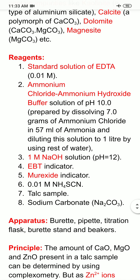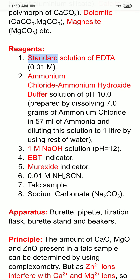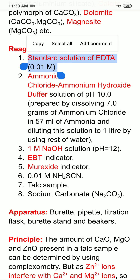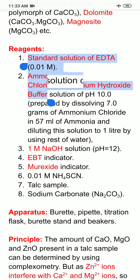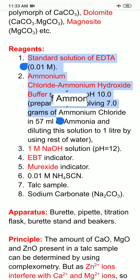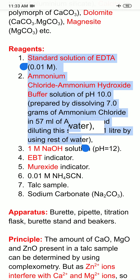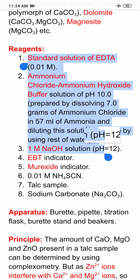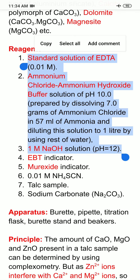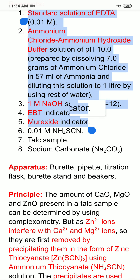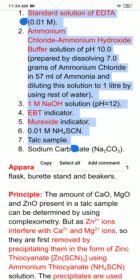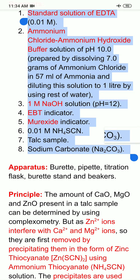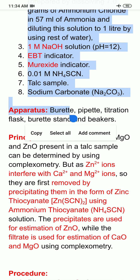For the determination of calcium oxide, magnesium oxide, and zinc oxide in talc, we need certain reagents. First is a standard solution of EDTA — say 0.01 molar EDTA. We also need an ammonium chloride–ammonium hydroxide buffer of pH 10, prepared by dissolving 7 grams of ammonium chloride in 57 ml of ammonia and diluting to 1 liter. Then we need 1 molar NaOH solution of pH 12, eriochrome black T indicator, murexide indicator, 0.01 molar ammonium thiocyanate, the given talc sample, and sodium carbonate.